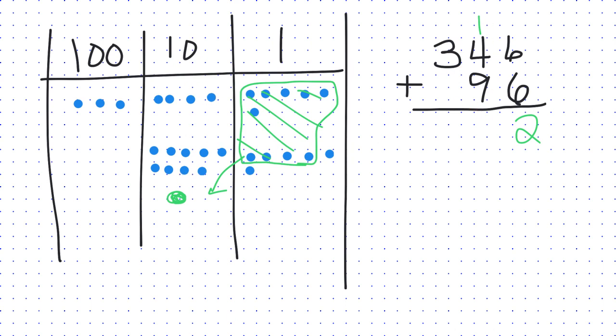Which means I can have a brand new 100. That's what this 1 is way up there for. And I have 4 left over in the 10s column.